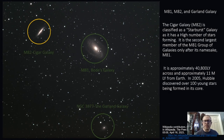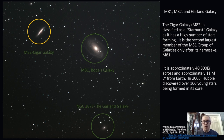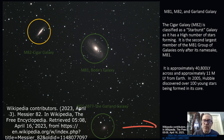The Cigar Galaxy, or M82, is classified as a starburst-type galaxy as it has a high number of stars forming. It is the second largest in the M81 group of galaxies, only after its namesake M81. It is approximately 40,800 light years across and approximately 11 million light years from Earth. In 2005, the Hubble Space Telescope discovered over a hundred young stars being formed at its core.